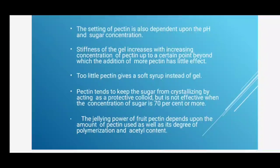Pectin tends to keep sugar from crystallizing by acting as a protective colloid, but is not effective when sugar concentration is 70% or more. So sugar concentration should be kept below 70% for making a good jelly. The gelling power of fruit pectin depends on the amount of pectin used, its degree of polymerization, and acetyl content.